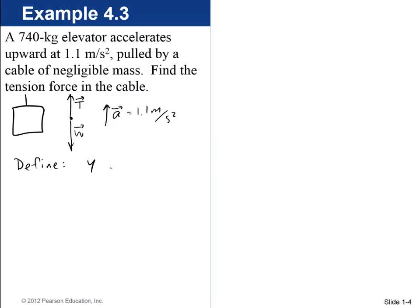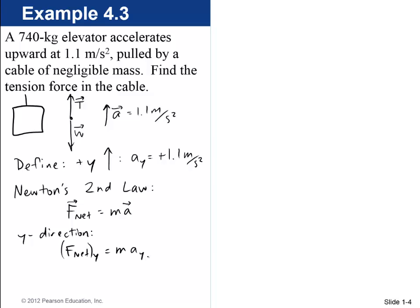Let's define the y-axis as being plus y is up. So that means the y component of a is plus 1.1. We've got Newton's second law, which in vector form is F_net equals mA. In the y direction, which is our direction of interest, it's F_net_y equals m times A_y. Where F_net is the tension upward minus the weight downward, and that's going to be equal to m times A_y. So we can solve that equation now for T. T equals mg plus mA_y. We can pull out the m. It's m times (g plus A_y).